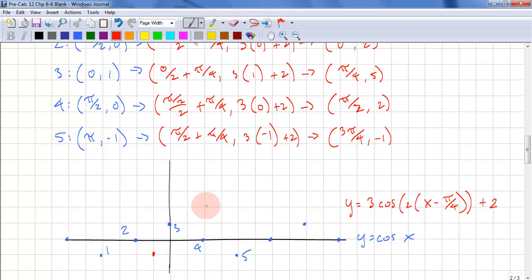Our second point is 0, 2. And then we have pi over 4, 5. And pi over 2, 2. And 3 pi over 4, negative 1. That gives us our single cycle. And again, we can repeat this.